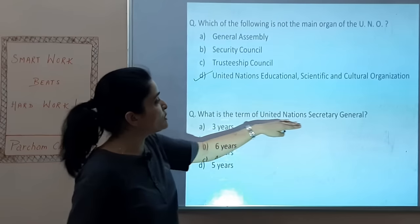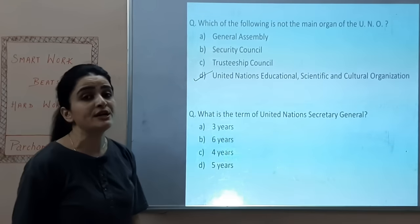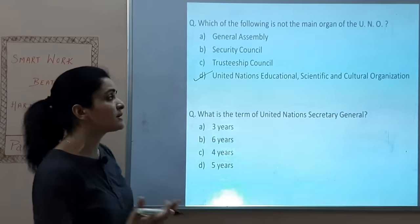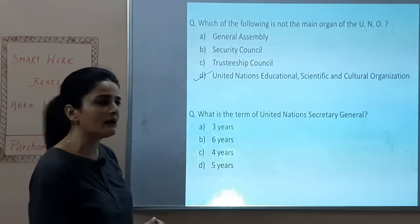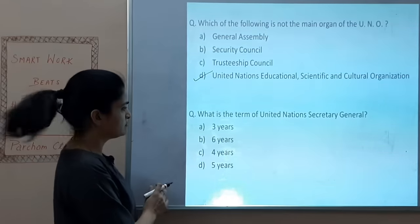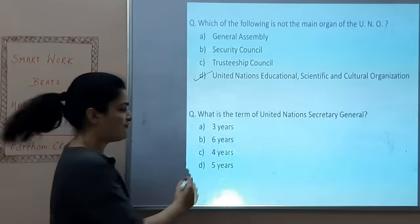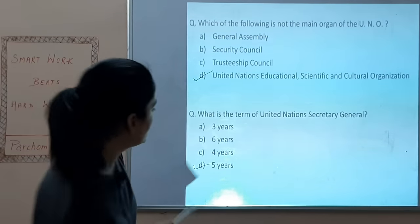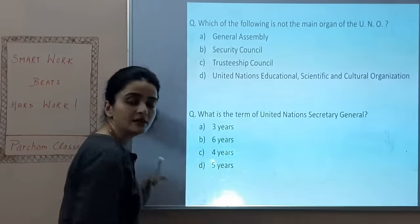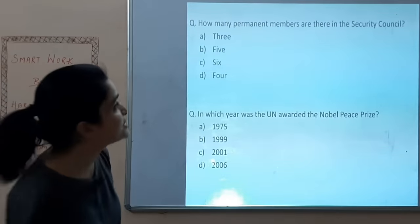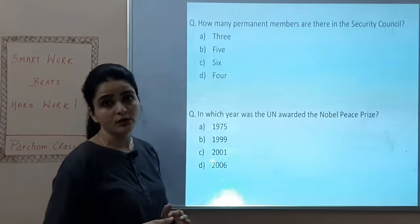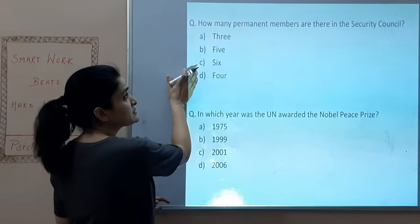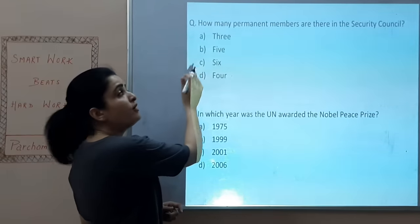What is the term of the United Nations Secretary General? Options: 3, 4, 5, or 6 years. The answer is 5 years, and the term is renewable — the person can be re-appointed. How many permanent members are there in the Security Council? Options: 3, 4, 5, or 6. The answer is 5.